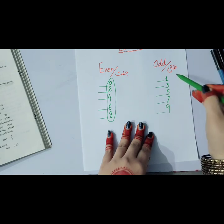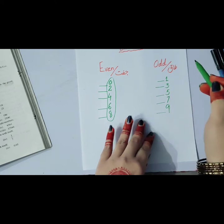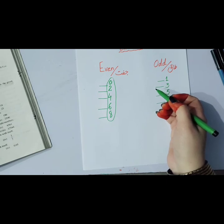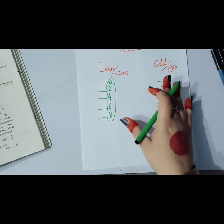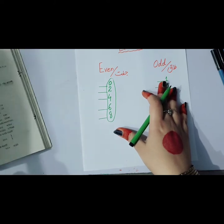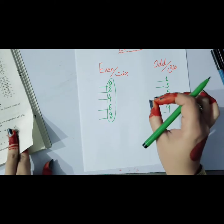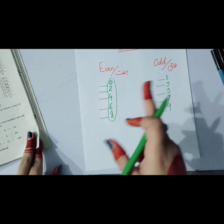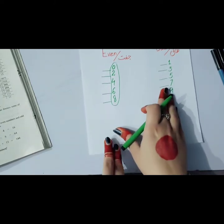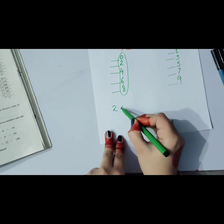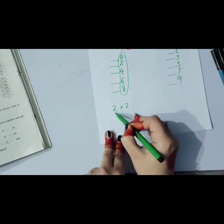One important thing to remember: if you find the square of an even number, it will also be even. And if you find the square of an odd number, it will also be odd.